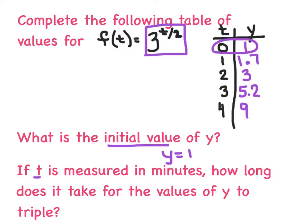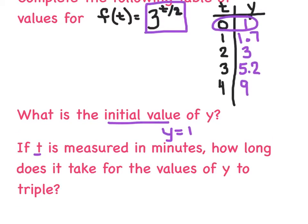And they said, if t is measured in minutes, how long does it take for the values of y to triple? So let's start with, we started with a 1. And then by the time we got to t equals 2, it tripled itself. And then by the time we got to t equals 4, it tripled again. It went from 1 to 3 to 9. So I said exactly every 2 minutes, the values of y are going to triple themselves. And notice the 2 that you see here corresponds to the 2 we saw up there in the exponent.